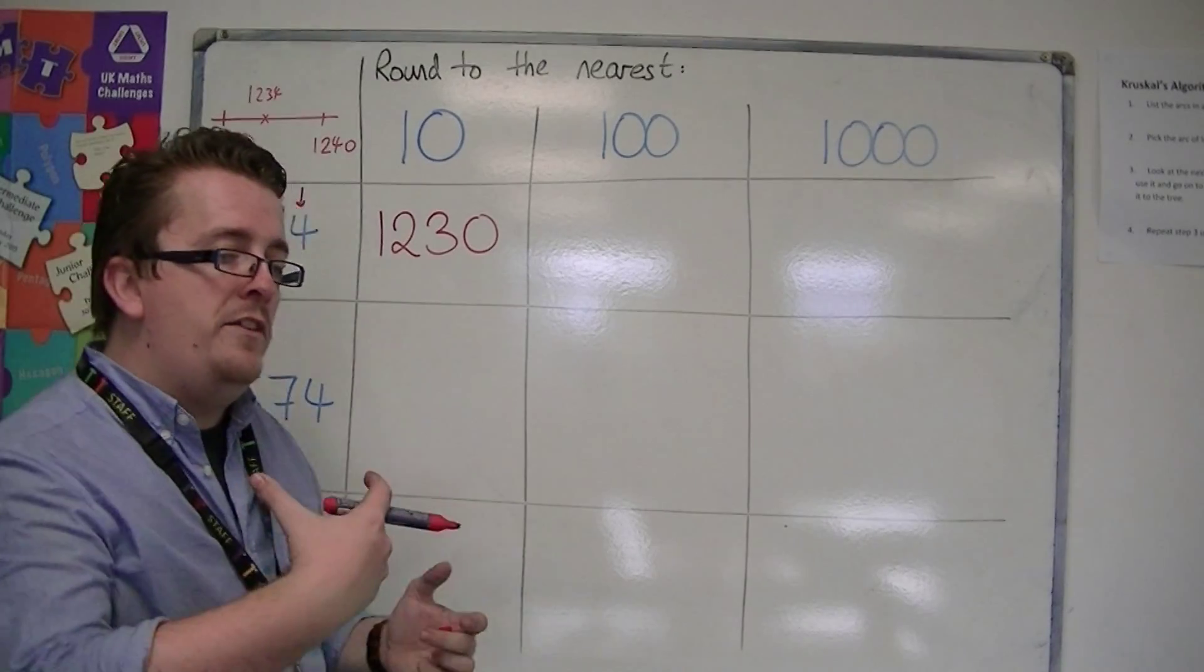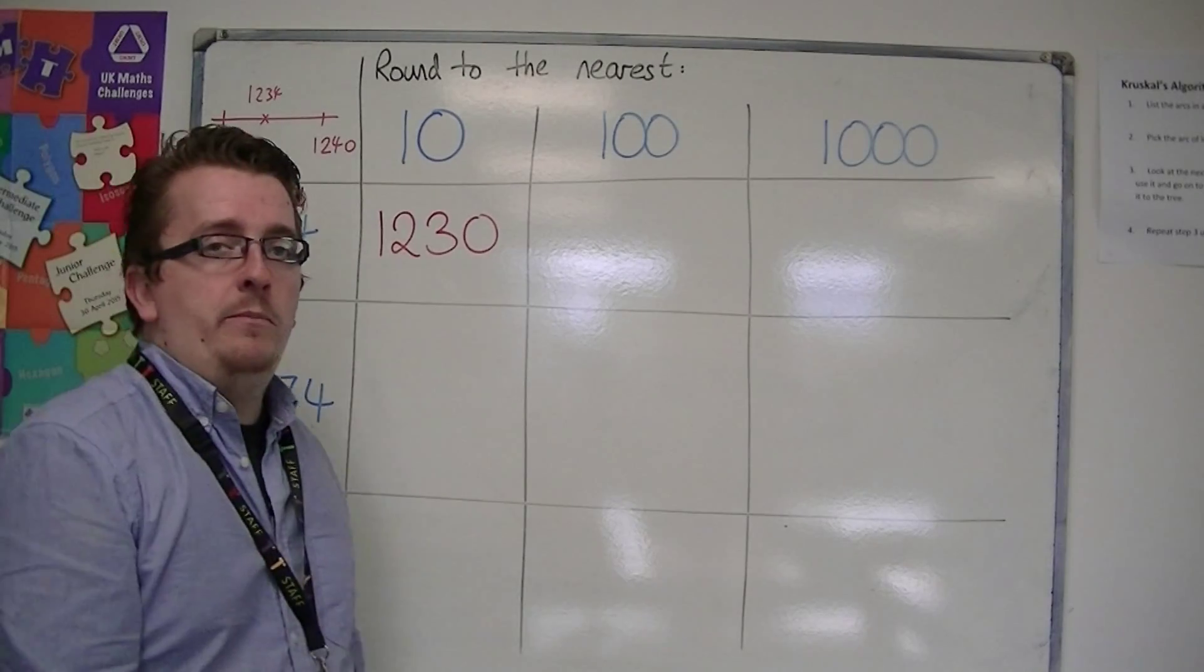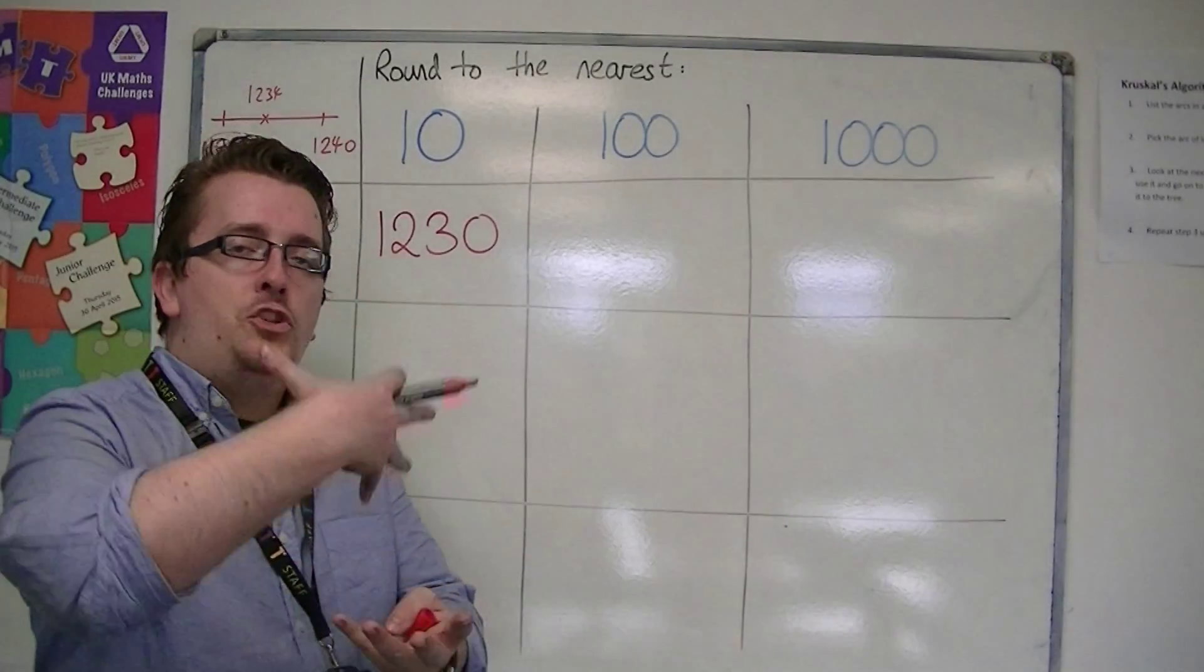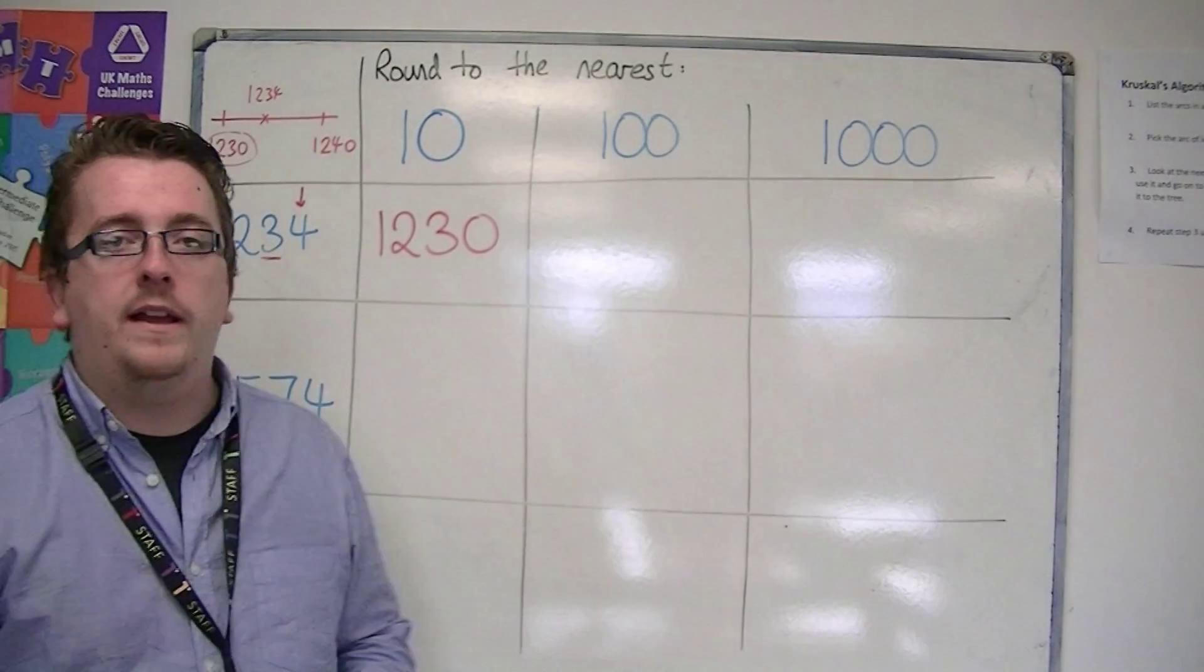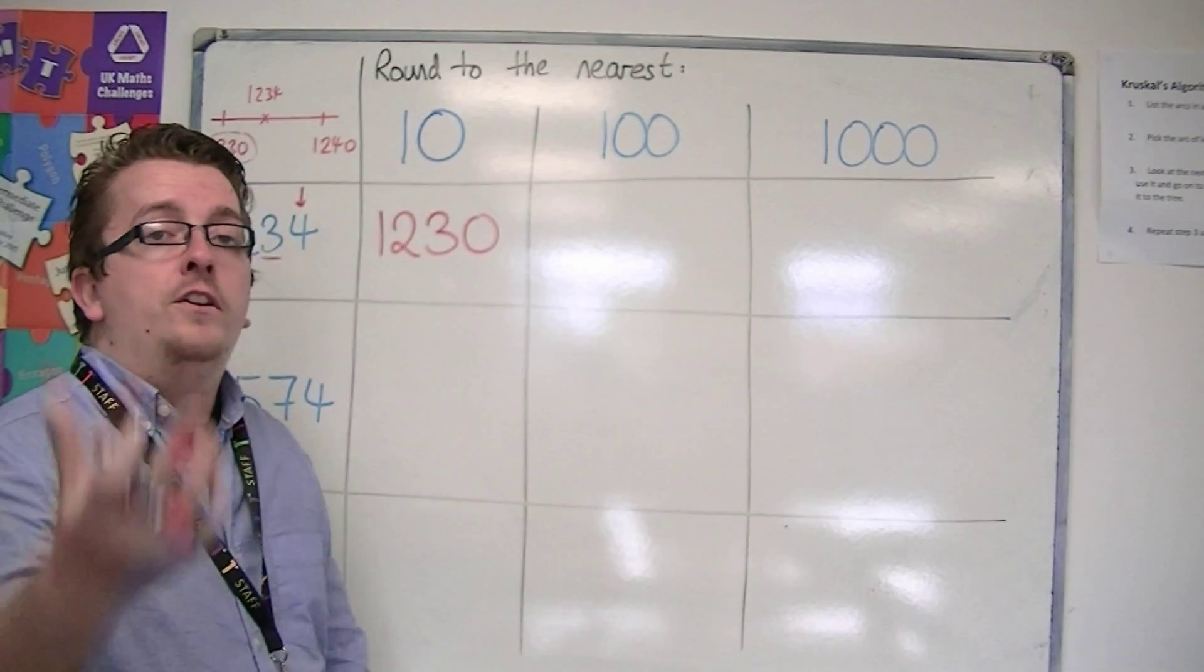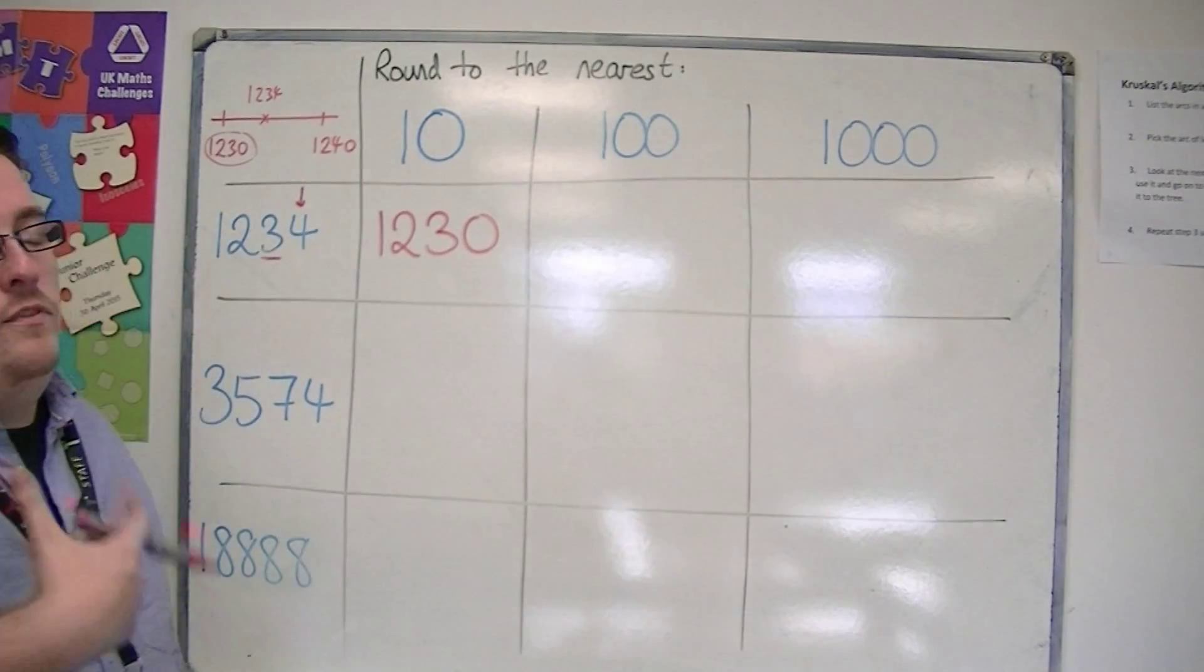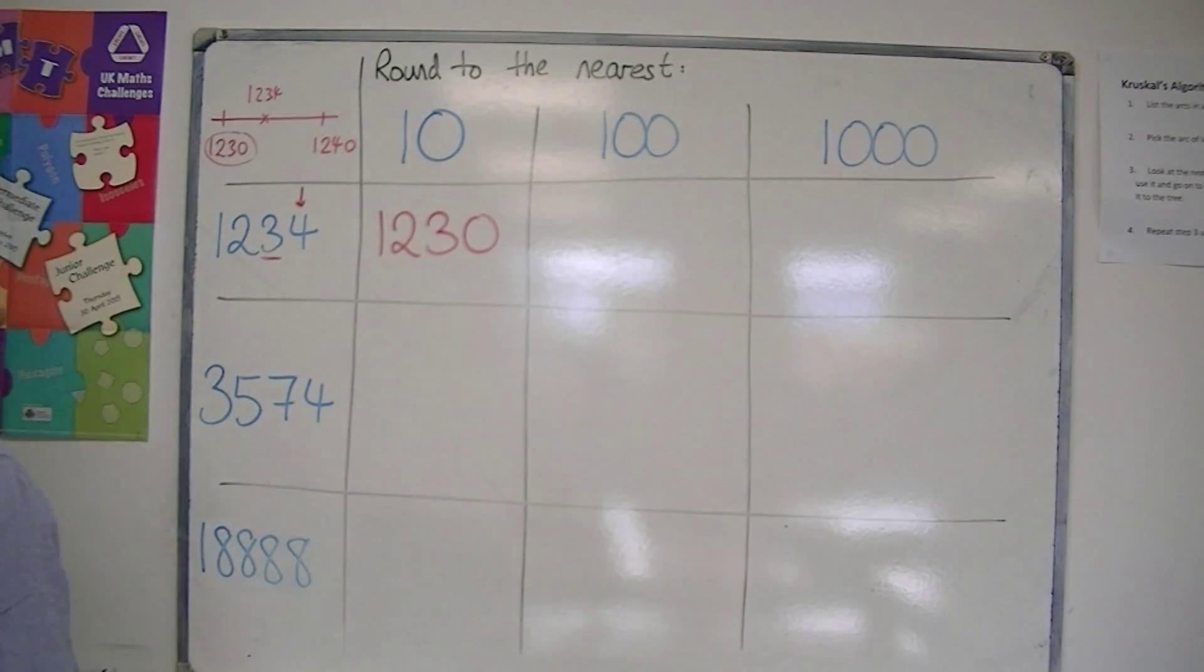So effectively, the idea that you're rounding down confuses people because you think you immediately need to subtract one away rather than adding one. Okay, you could think of it as if it is less than five, you keep it the same. And if it's five or more, you round up.